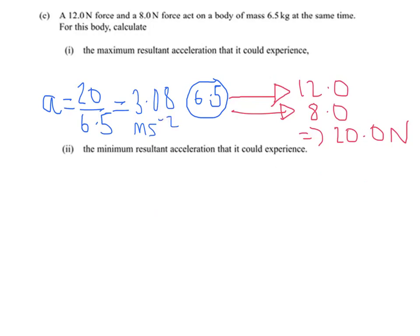Okay, so for the second one, it's a similar type thing, so let's draw a diagram for it again. So to get the minimum acceleration, we're going to want the minimum possible resultant force. So if we point our 12.0 newton force that way, to try and get the minimum resultant acceleration, we need them acting in opposite directions. So you'd have your 8.0 newtons that way.